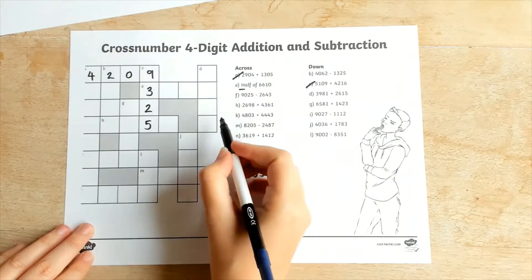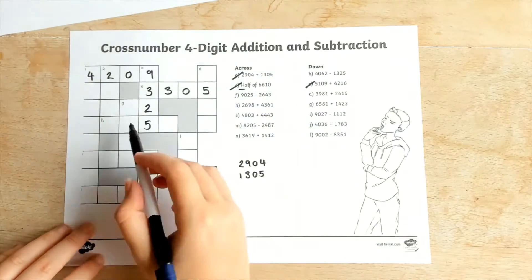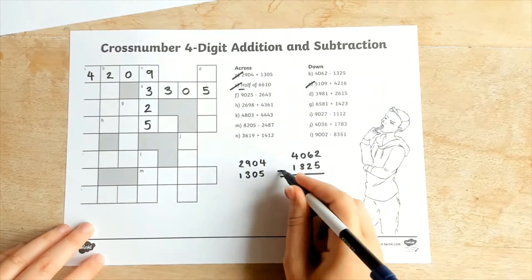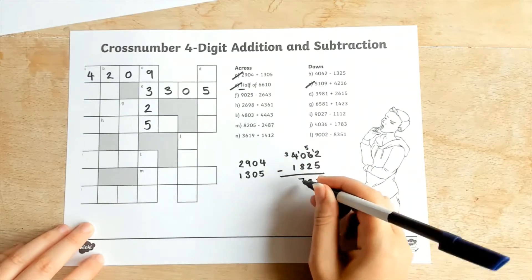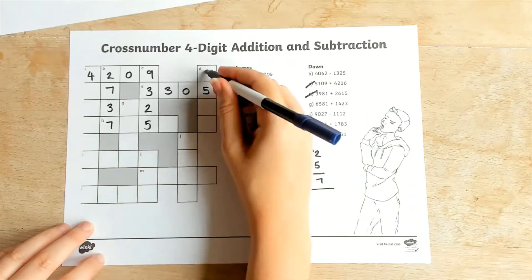This would make a fun end of maths topic activity and would be a great maths homework activity too. The cross number puzzles encourage children to check their answers to calculations as they can easily spot when an answer is incorrect as it will not fit within the puzzle grid.